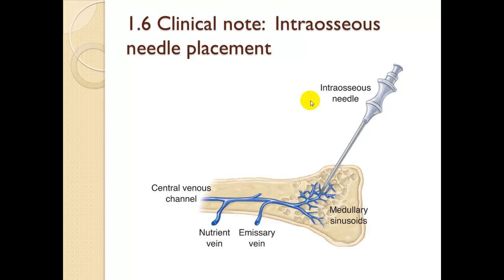Clinical note: intraosseous (IO) needle placement. The interosseous needle is placed into a section that is quite vascular, allowing us to tap the central circulation. When pushing fluid through it, it functions as well as a central line — actually faster than most central lines. We pressurize it in newer versions. Interosseous infusion is rapidly becoming the easiest way to initiate IV access on patients.